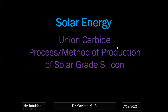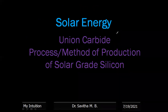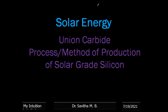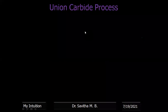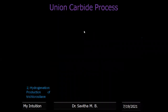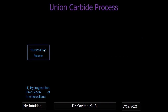How is solar grade silicon synthesized? It is synthesized by a method called the Union Carbide method, which has four steps. In the first step, metallurgical grade silicon is made to react with tetrachlorosilane and hydrogen in a fluidized bed reactor to produce trichlorosilane. There are four chlorine atoms in tetrachlorosilane; one chloride is replaced by hydrogen to form trichlorosilane. A by-product, tetrachlorosilane, along with some unreacted material, is recycled back for the next stage.